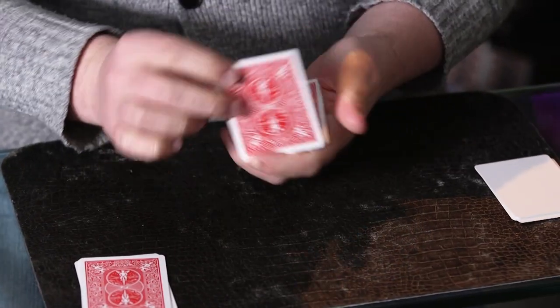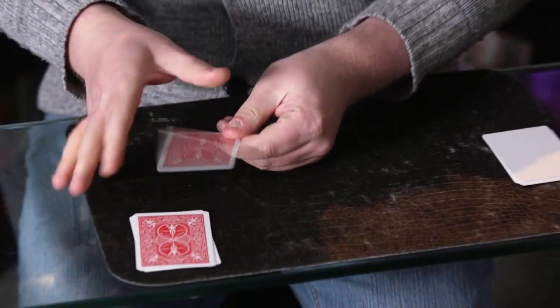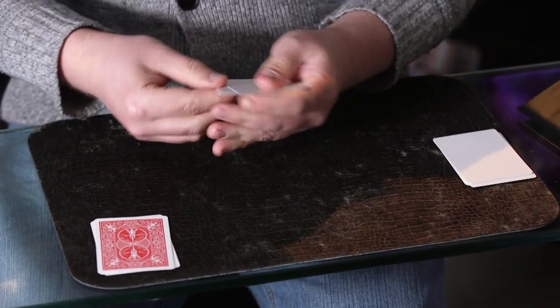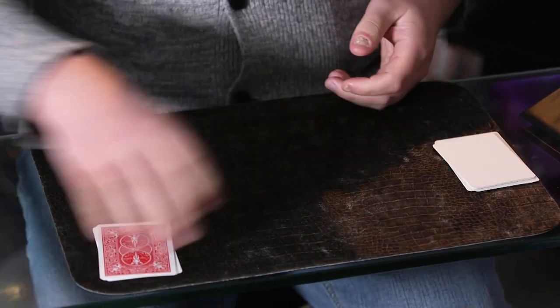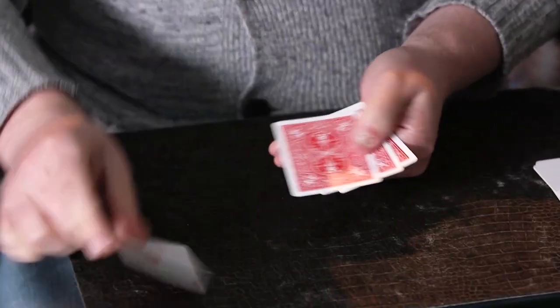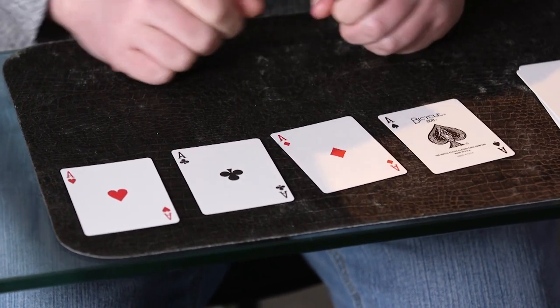This is the toughest bit though because we've got to get all three to jump across. One, two, three. If we do that then we're going to be left with our blank cards which means all the way over here are aces. Because you know, why not?